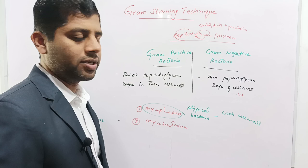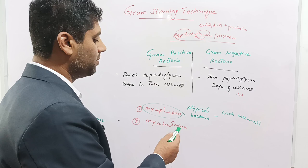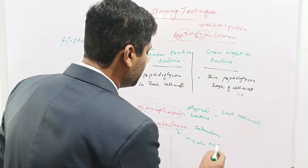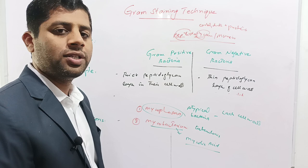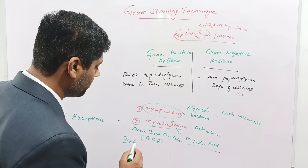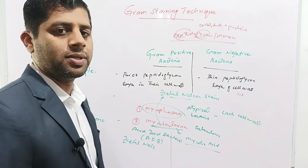Mycoplasma usually infects the respiratory tract. The other exceptional bacterium is Mycobacterium. Mycobacterium tuberculosis is a common example. Mycobacterium secretes mycolic acid from its cell wall, which interacts with the Gram stain. Therefore, Mycobacterium cannot be differentiated into Gram positive or Gram negative bacteria. Instead, it is termed acid-fast bacteria (AFB), because it is stained with the Ziehl-Neelsen stain. This Mycobacterium causes tuberculosis in humans as well as animals. So Mycoplasma and Mycobacterium are the exceptional cases to the Gram staining technique.